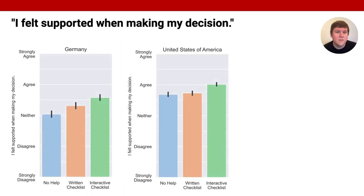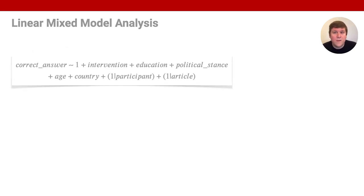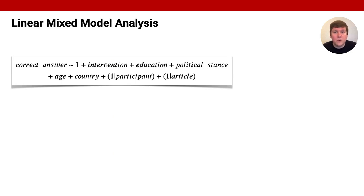The figure shows the perceived helpfulness ratings of the three different interventions. Across both countries, we can observe a monotonic increase in the perceived helpfulness. To understand whether the checklist helped people provide correct article ratings, we ran a linear mixed model analysis. We included information on whether a participant provided the correct answer as a dependent variable and added random effects of the news article that was rated and the participant that rated the article.